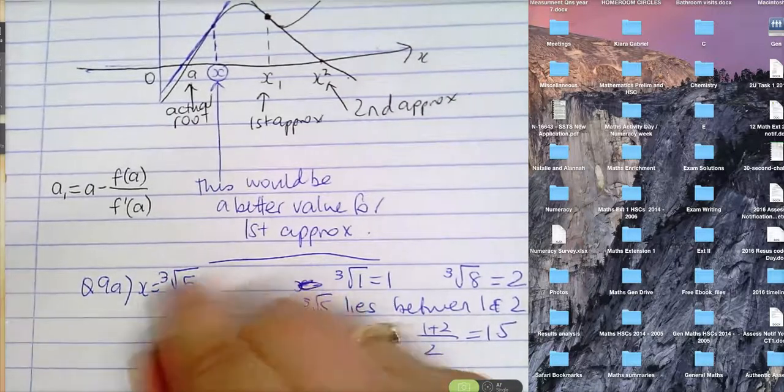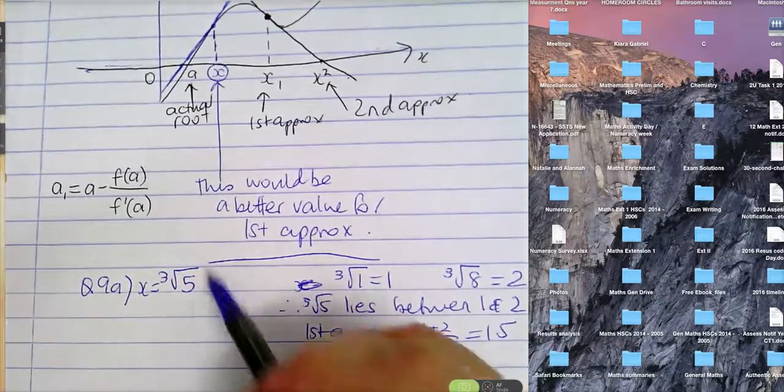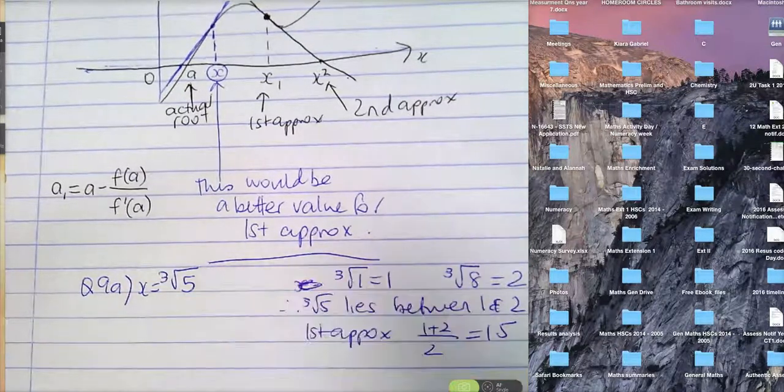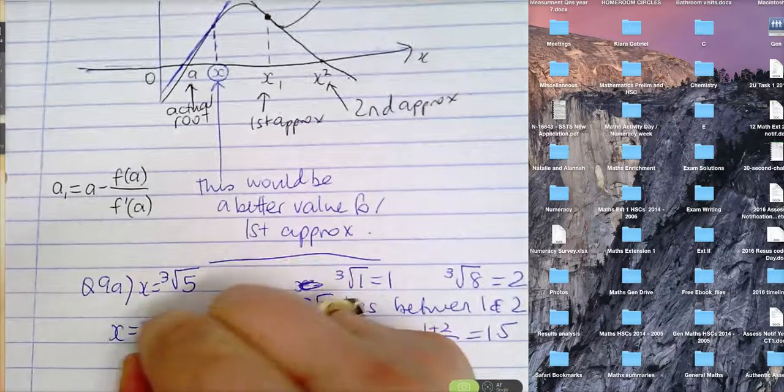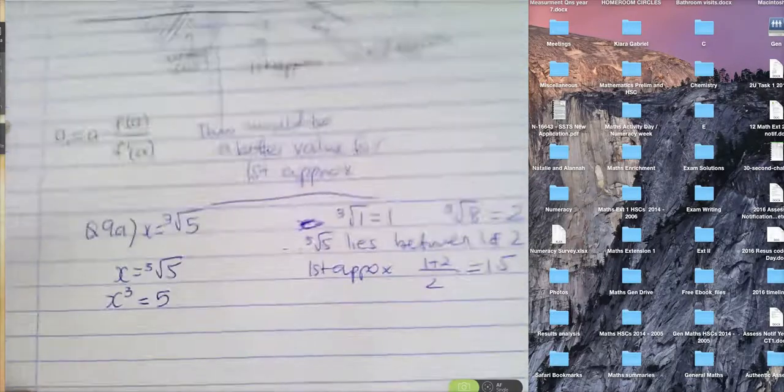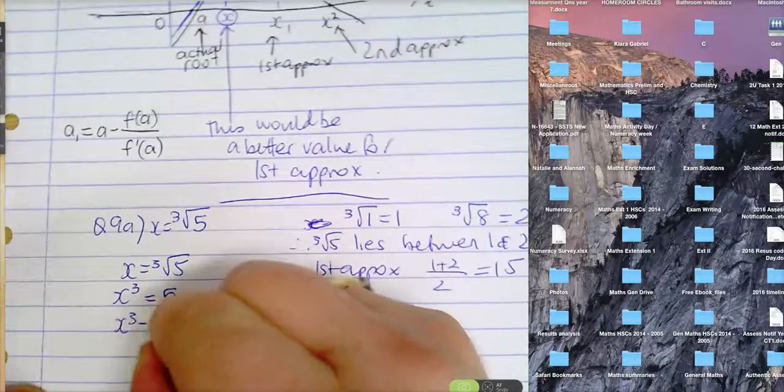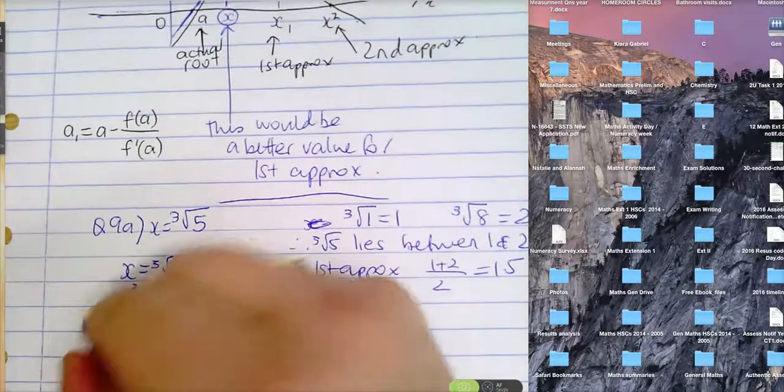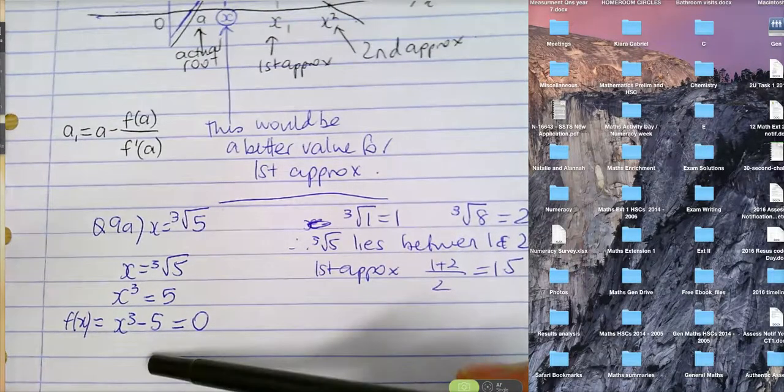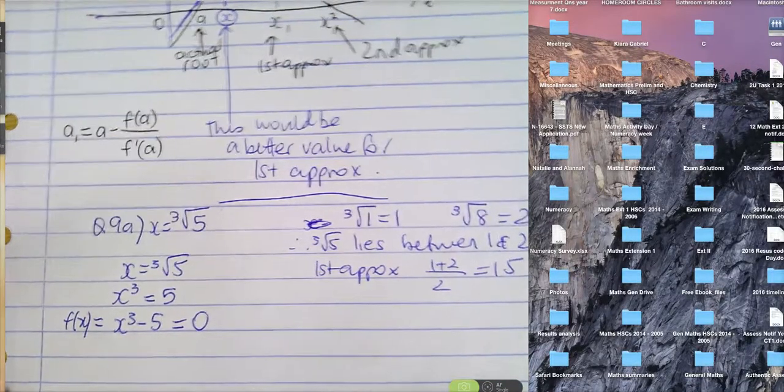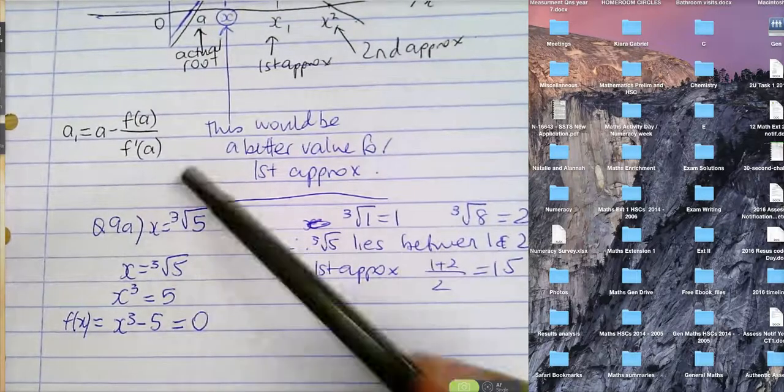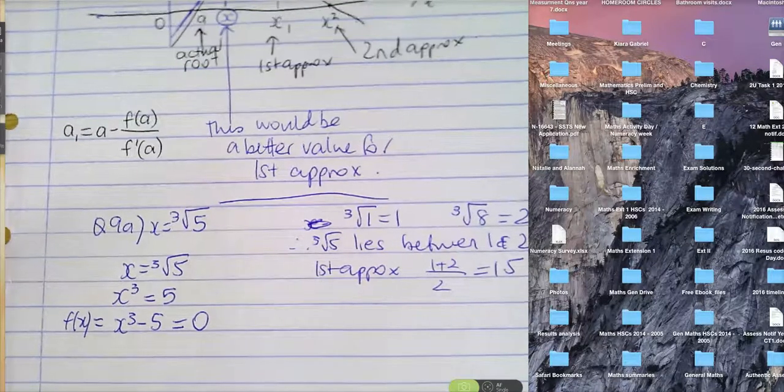So therefore your first approximation will be one plus two over two, which is one and a half. When you're trying to use Newton's method to come up with an approximation for this, we need this in the form of an equation. So if we've got X is cubed root of five, we will cube both sides and get X cubed is five. The next step is to take everything over to the left-hand side. So X cubed minus five is zero. That will be your function of X. You can then use Newton's method now using that as your function of X. And everyone might want to just do one more example, one more question in question nine. I think I set 9a or b, just do another one for practice tonight.